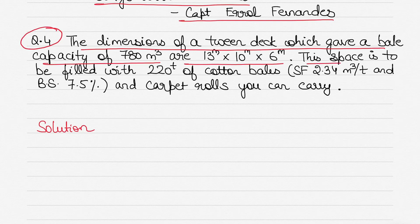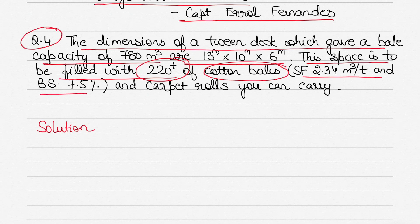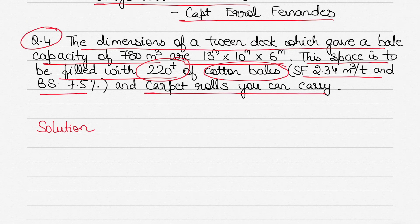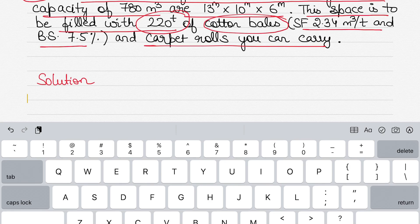This space is to be filled with 220 tons of cotton bales. The weight of the cotton bales is given, along with the stowage factor and broken stowage. After loading the cotton bales, we also need to find how many carpet rolls can be carried in the same twin deck space. The stowage factor is the volume occupied by a unit weight of cargo, and the broken stowage is the space between packages which remains unfilled.